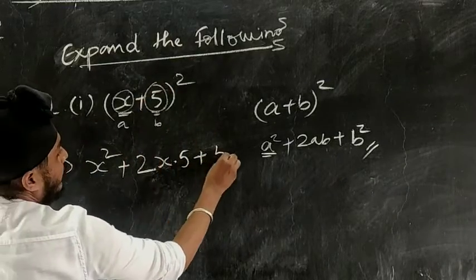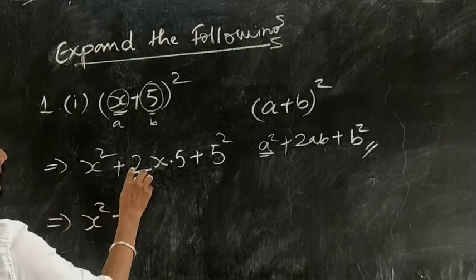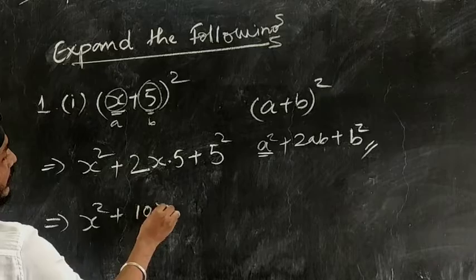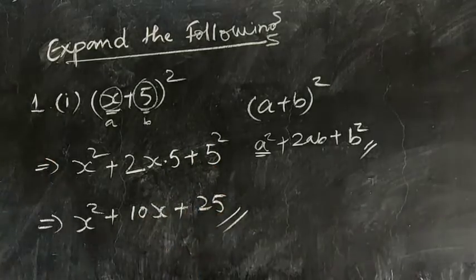So what we'll get: x² plus 2 × 5 = 10, so 10x, plus 5² will be 5 × 5 = 25. This is your answer.